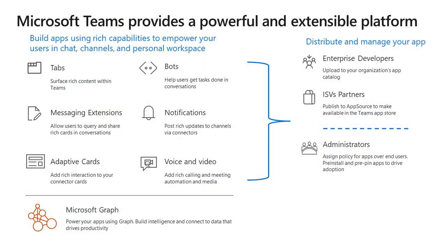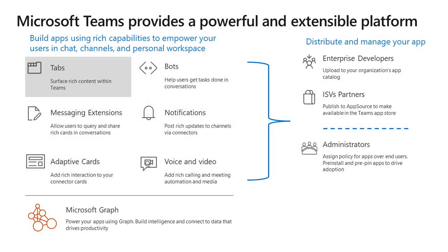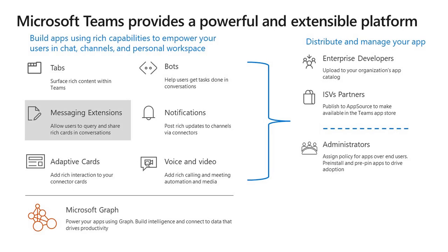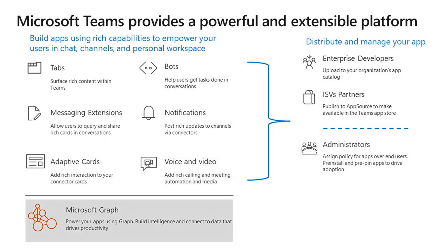Let's start by talking about the overall platform and its capabilities. There are a number of different ways that you can integrate your service or solution into Teams across chats, channels, and personal workspaces. We have tabs that allow you to connect rich content. We have conversational bots that allow users to get things done in chats and channel conversations. We have messaging extensions that allow users to query and share content in conversations through structured UI. We have the ability to trigger notifications and alerts. We support rich adaptive cards so that you can construct rich custom content inside of conversations. And lastly, we provide the ability to manipulate calling and meeting through our voice and video APIs — all built on top of the intelligence and programmability layer of the Microsoft Graph.